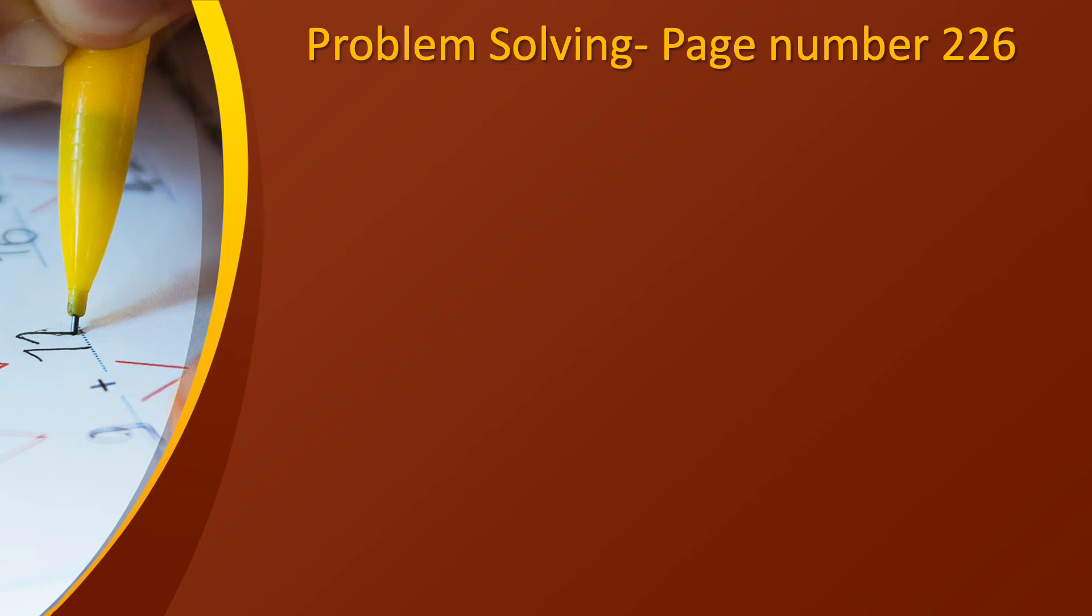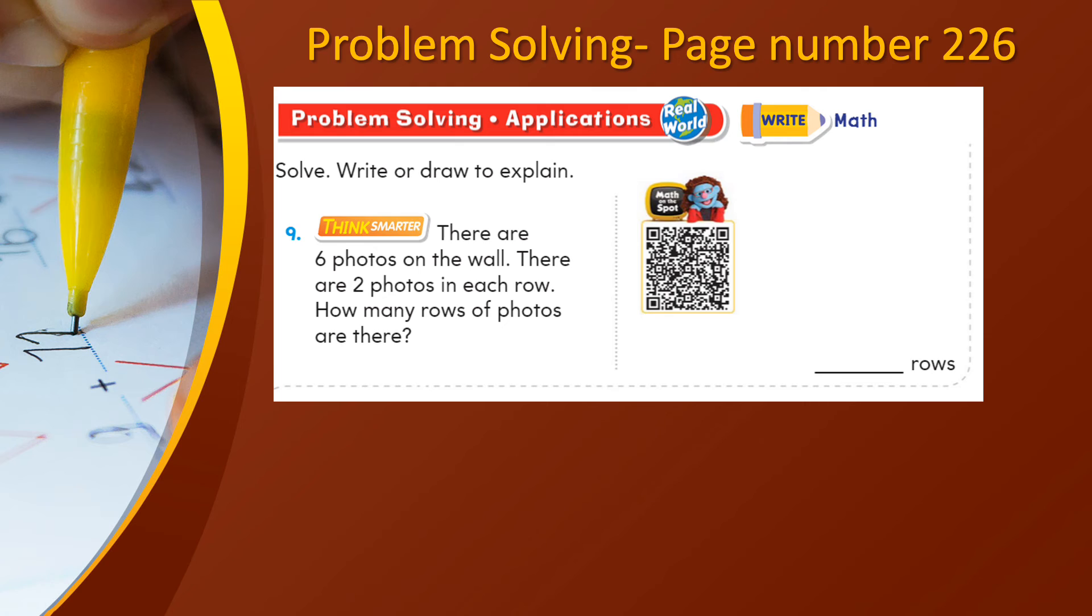Now let's look at the problem solving application on page number 226. It's a think smarter question number 9. There are 6 photos on the wall. There are 2 photos in each row. How many rows of photos are there? In such cases, children always make a mind map. In fact, you can use a little corner of this paper to do your rough work.